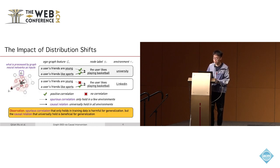The methodology of this paper is based on a key observation, which I'll illustrate through a simple example. We consider predicting a user's interest in social networks — for example, whether the user likes playing basketball. Within the graph, we have two node features: whether the user's friends are young, and whether the user's friends like sports.